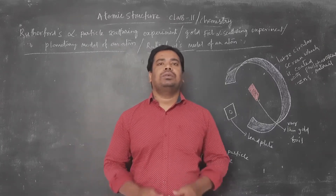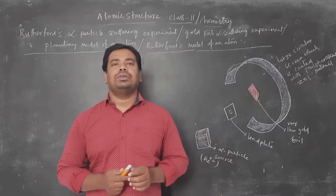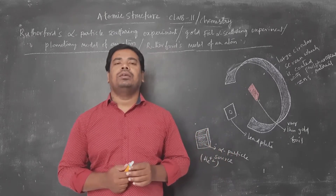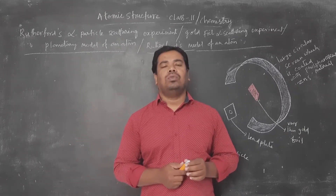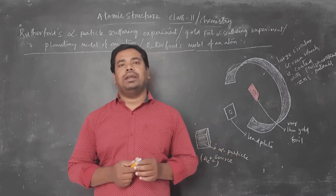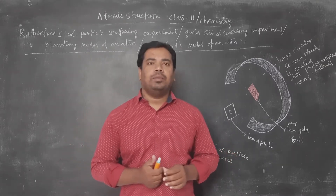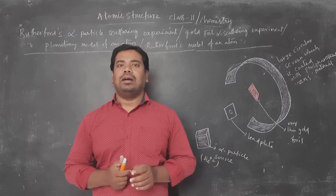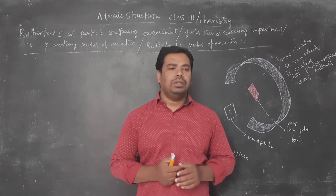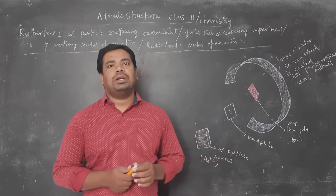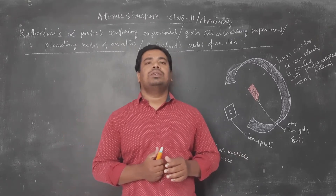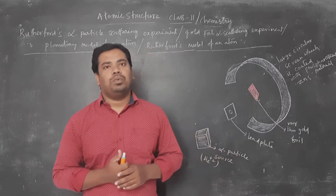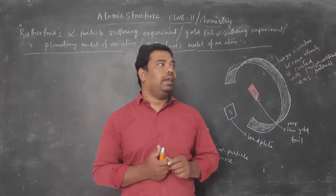Hi chemistry. The topic is Rutherford's alpha particle scattering experiment, also known as Rutherford's gold foil alpha scattering experiment, the planetary model, or Rutherford's model of an atom. Before this, the J.J. Thomson atomic model was proposed, but it was not accurate, so Rutherford later proposed his own model of an atom.